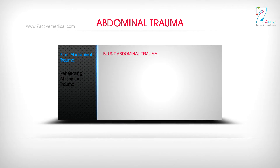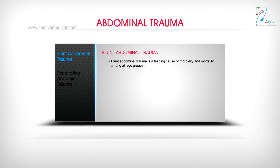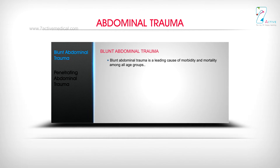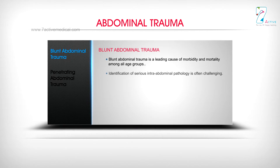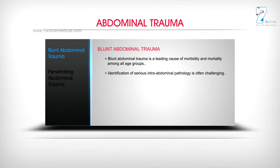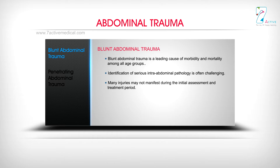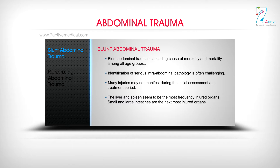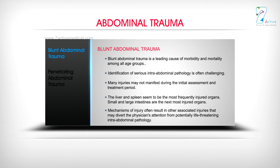Blunt Abdominal Trauma is a leading cause of morbidity and mortality among all age groups. Identification of serious intra-abdominal pathology is often challenging, and many injuries may not manifest during the initial assessment and treatment period. The liver and spleen are the most frequently injured organs, followed by the small and large intestines. Mechanisms of injury often result in associated injuries that may divert the physician's attention from potentially life-threatening intra-abdominal pathology.